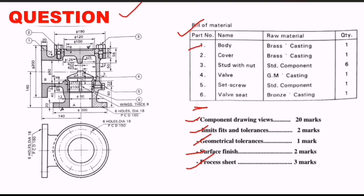Look at this — there are six parts. The first one is the body, the second is the cover, the third is the stud with nut, the fourth is the valve, the fifth part is the set screw, and the sixth part is the valve seat. These are the six parts of the non-return wall.